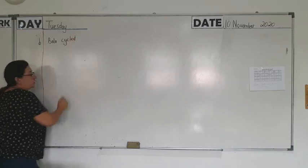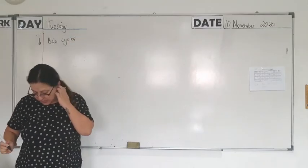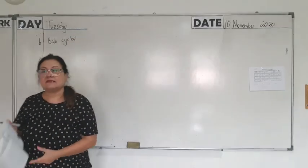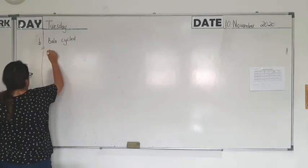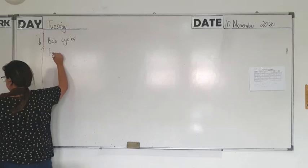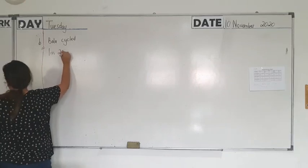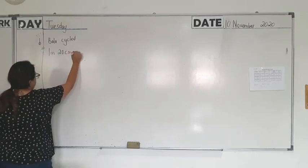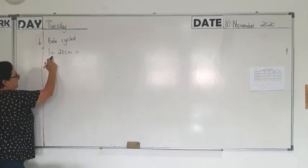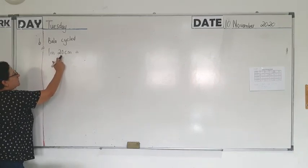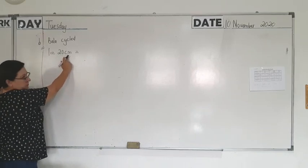So we have two different ways of transport. Now Bala Cycle is 1 meter. Leave a line, write down 1 meter 20 cm is equal to. Now remember, write down 1 in 1 box, M in 1 box, 2 in 1 box, 0 in 1 box, cm in 1 box.